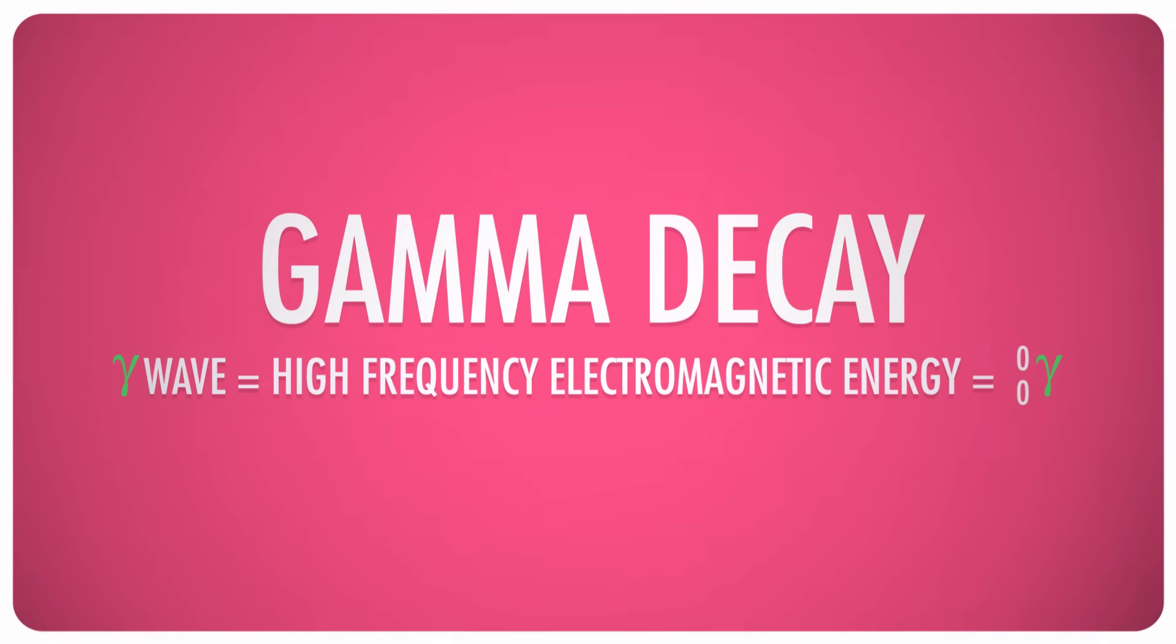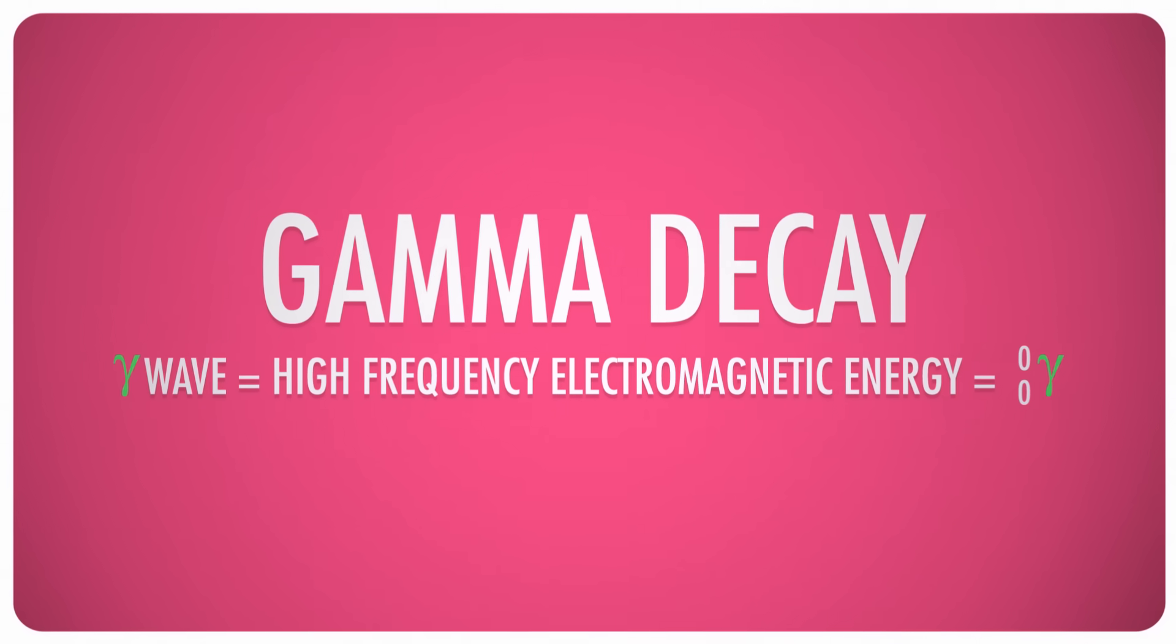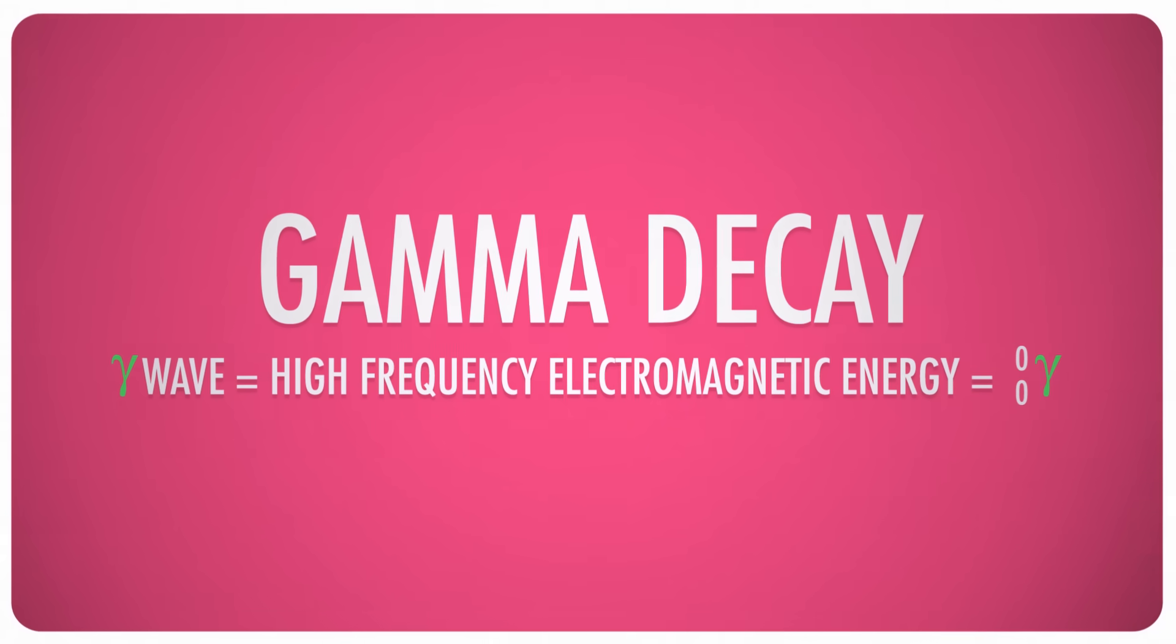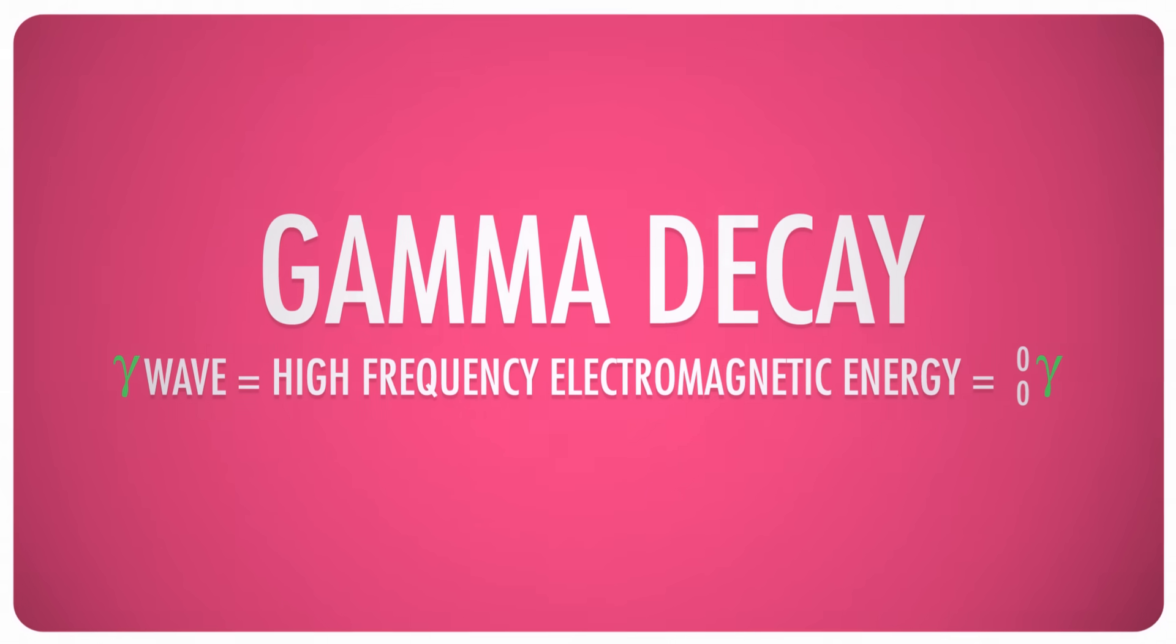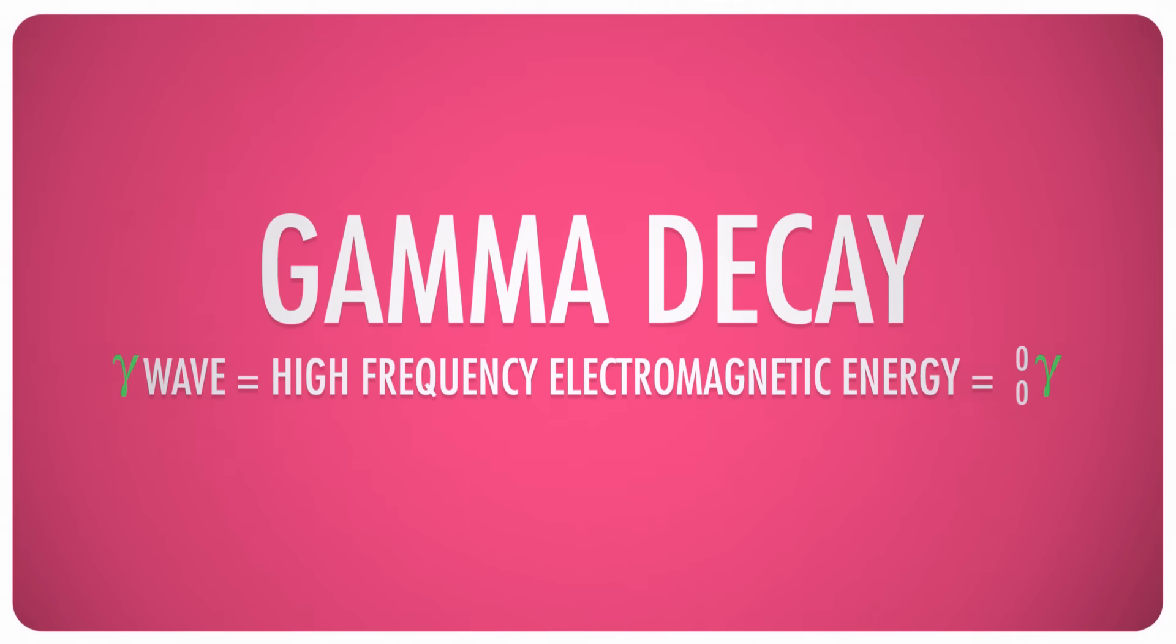And it releases electromagnetic radiation similar to visible light or UV radiation, but higher on the energy scale. Because it's just energy, gamma radiation has no mass and contains no protons, neutrons, or electrons, so it's written with two zeros.